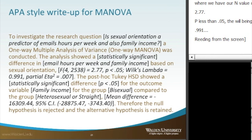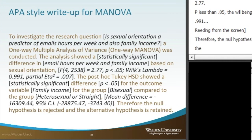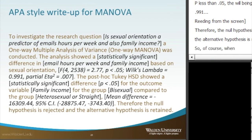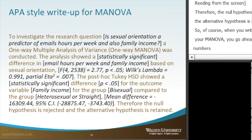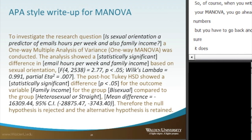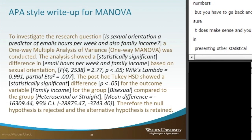The mean difference was negative $16,309, with a confidence interval of approximately negative $2,875 to negative $3,743. Therefore, the null hypothesis is rejected and the alternative hypothesis is retained. It's important to go back and read the write-up to make sure it makes sense, and you may want to expand it by presenting other statistical findings relevant to your particular research question.